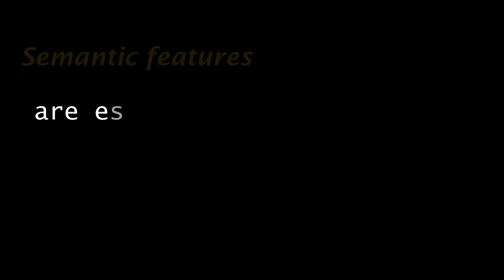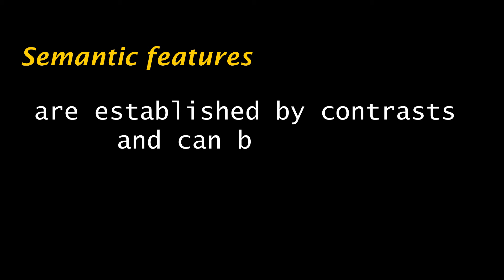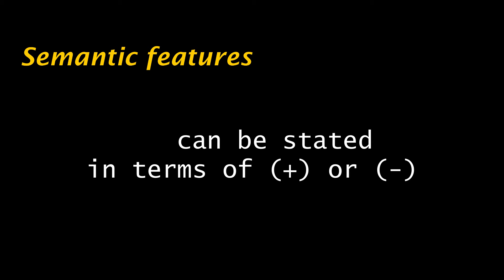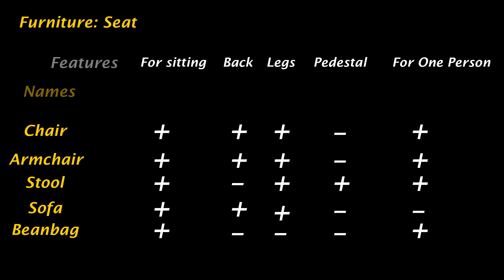Semantic features are also set by contrast and can be acknowledged by plus and minus signs. See the examples — the items in furniture share some common features. From this feature analysis you can also track the unique components belonging to a specific word. Check the other illustrations.